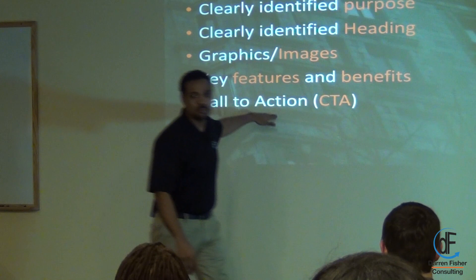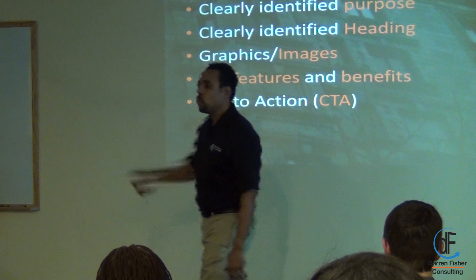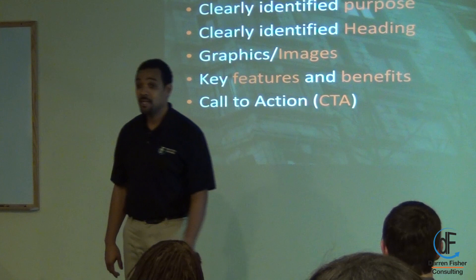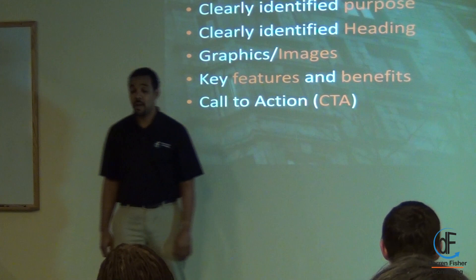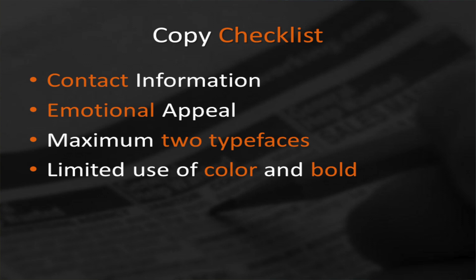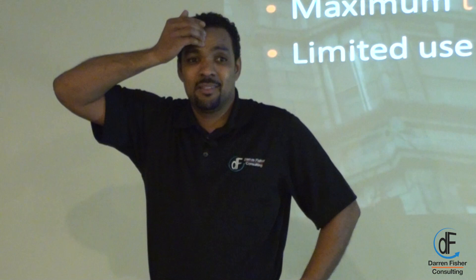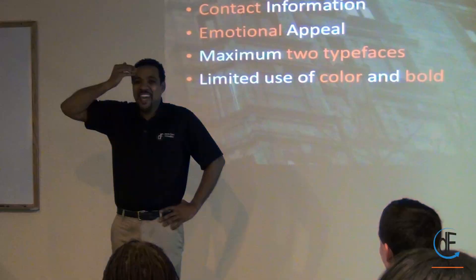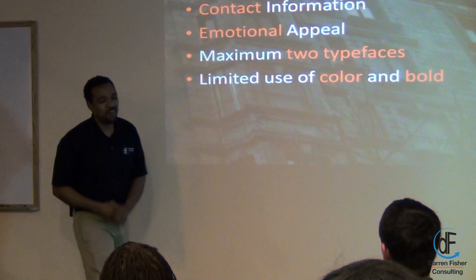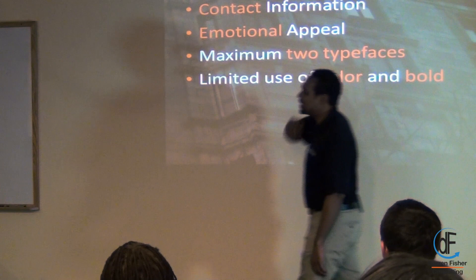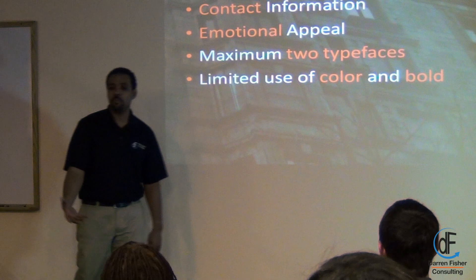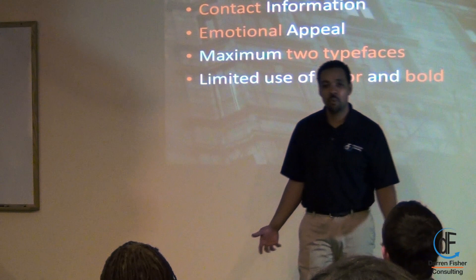CTA — call to action. What do I do? What do you want me to do? Should I call you? Should I email you? Should I visit your website? Should I ignore you? Create some type of urgency. A call to action. Contact information — has anyone ever sent something out and didn't really have contact information on it? I did that once. I created it, made a mistake, forgot — it has everything on there, that looks good to me. Some kind of contact information. Some type of an emotional appeal. Why do we want an emotional appeal? People buy based on emotion — they justify with logic.